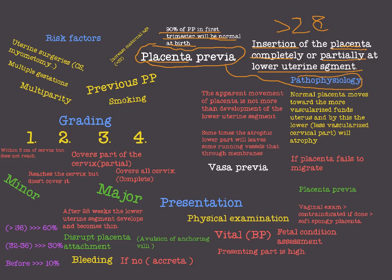The pathophysiology of placenta previa: normally, the placenta moves toward the more vascularized fundus of the uterus. The upper part is more vascularized, so the placenta normally moves to the upper part of the uterus. By this migration, the lower part near the cervix becomes less vascularized, which leads to atrophy of this lower part.